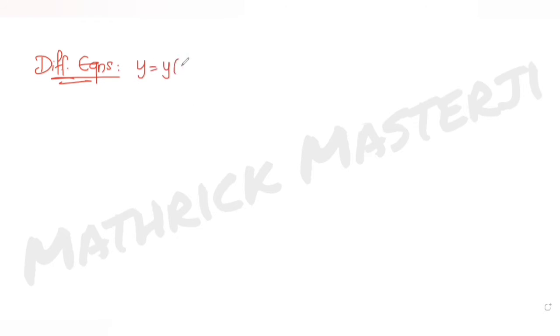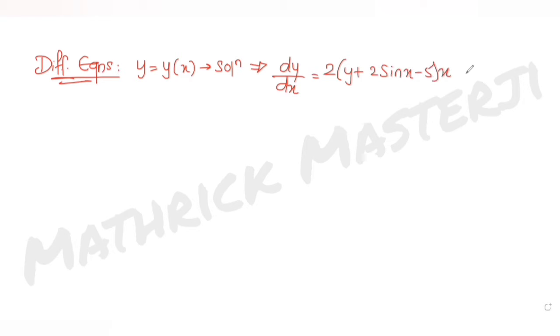Hi guys, I hope you are all doing well. Let's see today's question. Today's question is taken from the topic of differential equations. The question tells us: let y = y(x) be the solution of a differential equation given as dy/dx = 2(y + 2sin(x) − 5)(x − 2cos(x)), such that y(0) = 7.